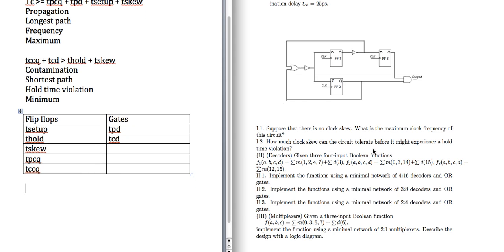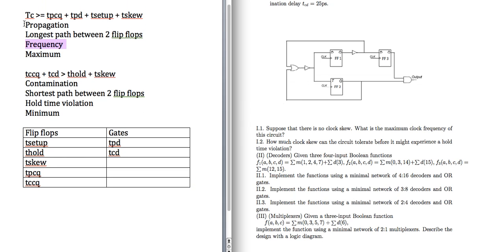Now let's look at this problem. When I say longest path, it's the longest path between two flip-flops — same thing for shortest path. This problem asks you to find the maximum clock frequency of the circuit. We see frequency, so that's our keyword, meaning we need to use the setup-time formula. Frequency is 1 over the period T, so we want to find T first, then calculate frequency.